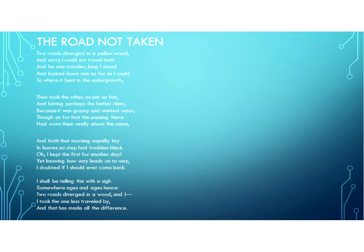Third stanza. And both that morning equally lay in leaves no step had trodden black — so he's back to the idea that he started with: two roads diverged and they're equal, no reason to take one or the other. Oh, I kept the first for another day, yet knowing how way leads on to way, I doubted if I should ever come back. So he can't take them both, he decides he won't take that one today. Maybe someday he'll come back and find out what's down that road, but he'll probably never come back. And we're just reading — very, very little interpreting going on here.